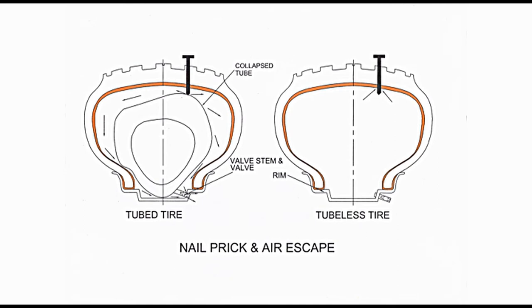In tubeless tyre, air does not escape through the hole in rim meant for valve stem; it escapes through the hole created by the prick. Until nail is not removed, air escapes slowly, and this does not flatten tyre immediately. Sudden flattening of tyre may make vehicle unstable and may be unsafe. In case of tubeless tyre, this situation does not occur, ensuring vehicle safety. However, removal from rim and mounting back may not be possible for a roadside mechanic, and if not done properly, it may damage the rim.